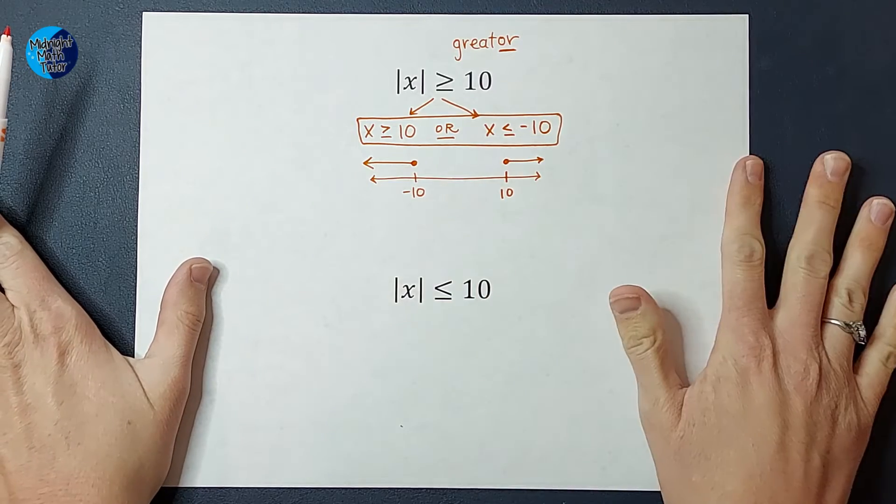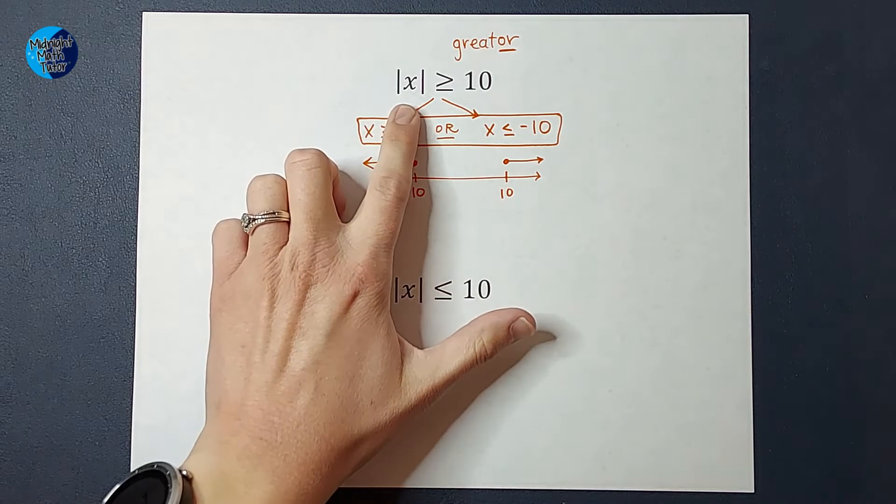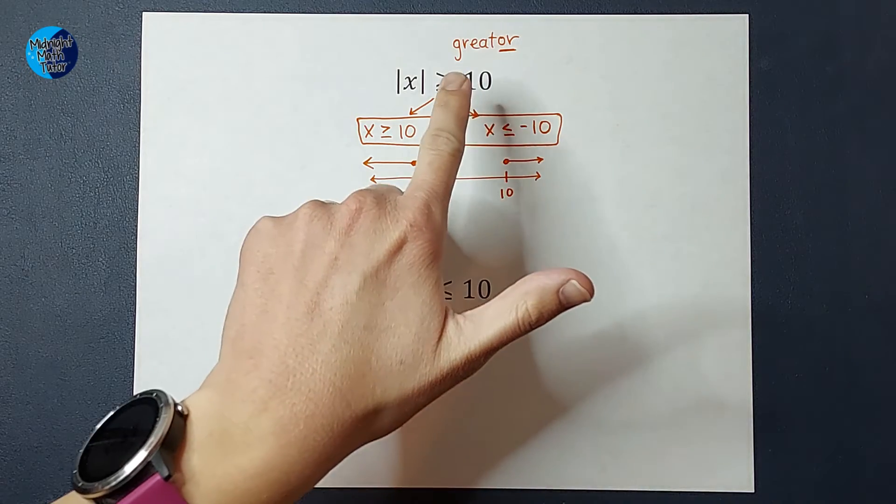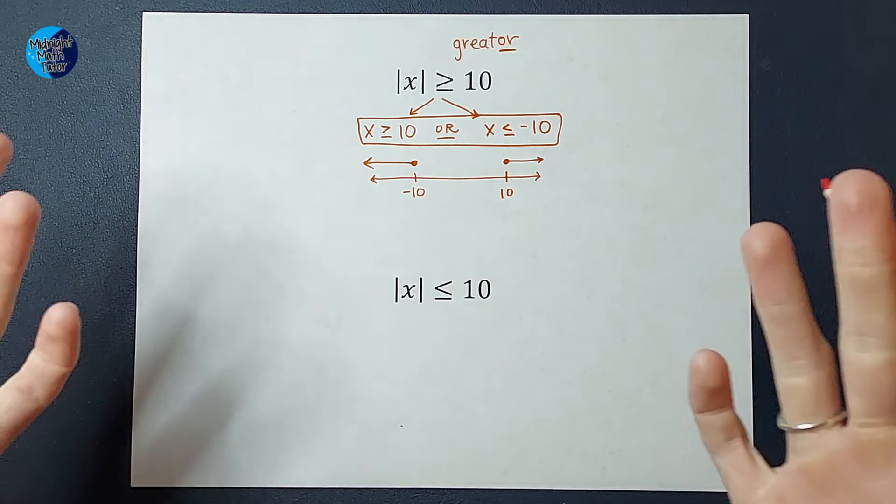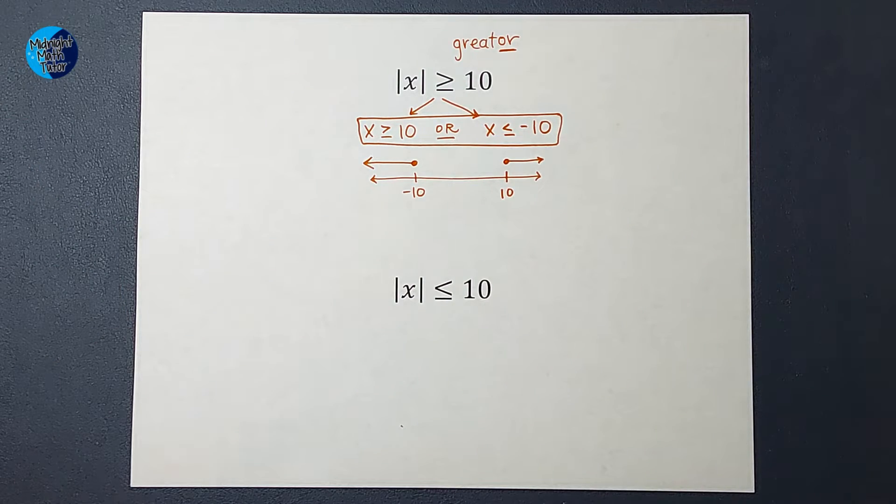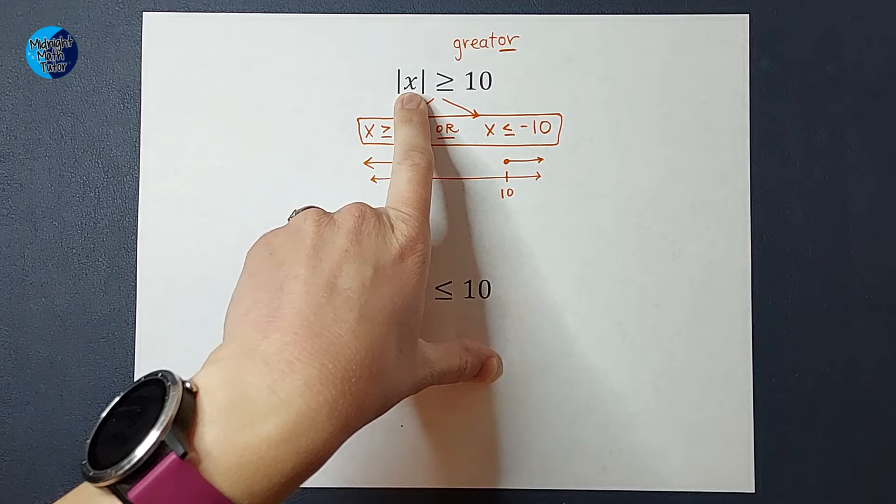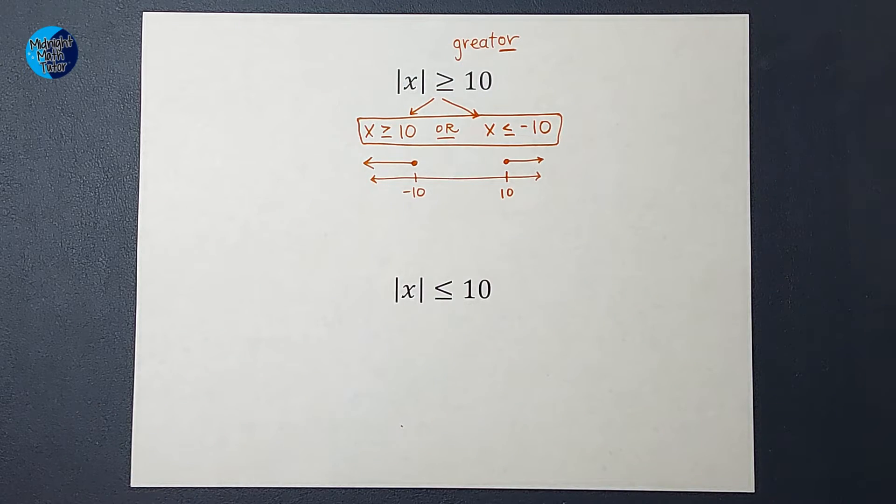That's telling me any number over here will work for X. So what if I plug in 100? Well, the absolute value of 100 would be 100 and 100 is greater than or equal to 10. So there we go. All those numbers over there work. You can plug in any of them. But what about these negative numbers over here? Well, if I were to plug in negative 50, the absolute value of negative 50 is 50 and 50 is greater than or equal to 10.